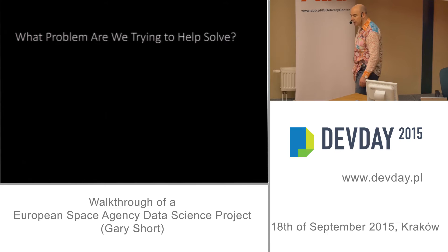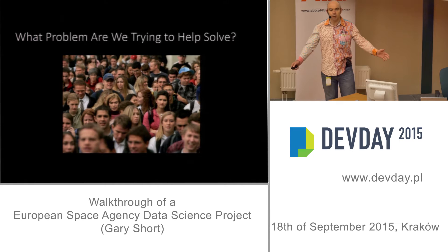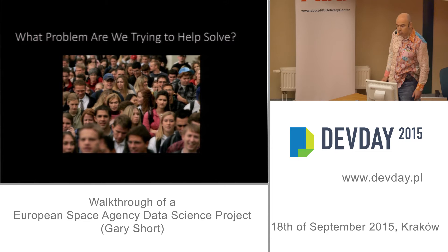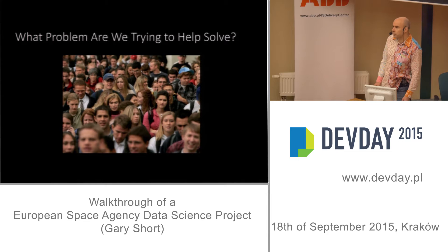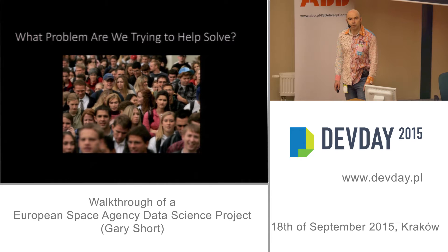So what problem are we trying to solve? Basically, people. There are a lot of people on the planet and we like to generate more. The people aren't really the problem — the problem is they all want to eat and live somewhere. Surprisingly, they want to live in the best places to grow food, because those places have a nice balance of sunshine and rain.